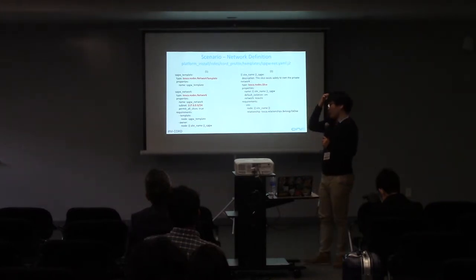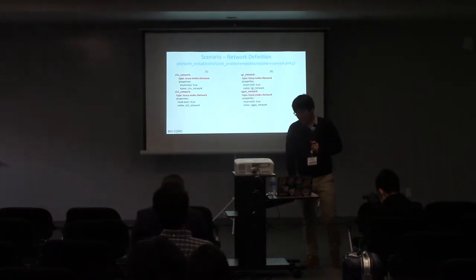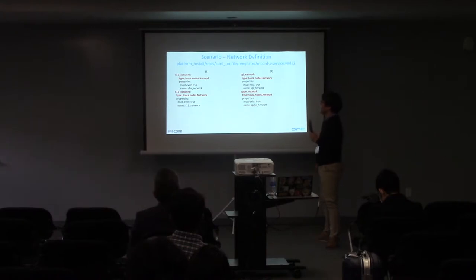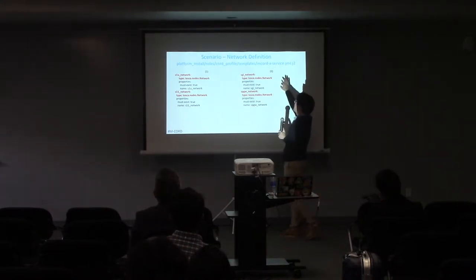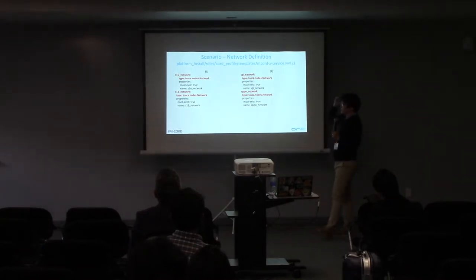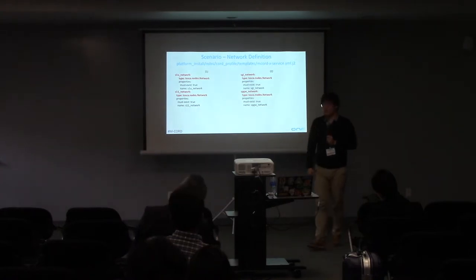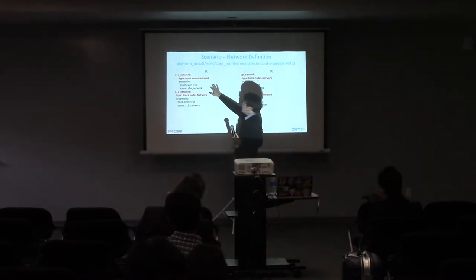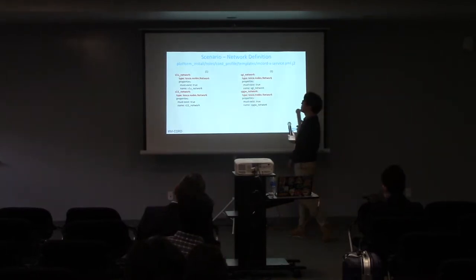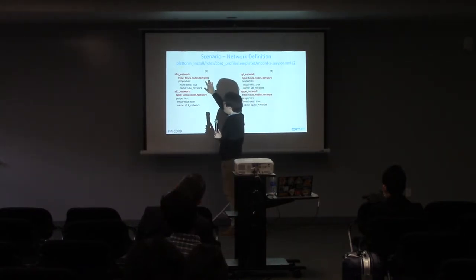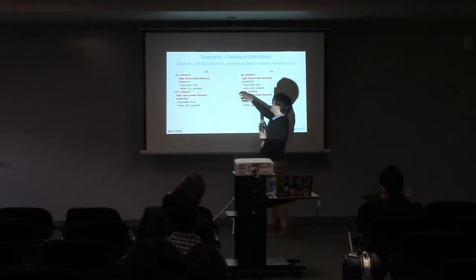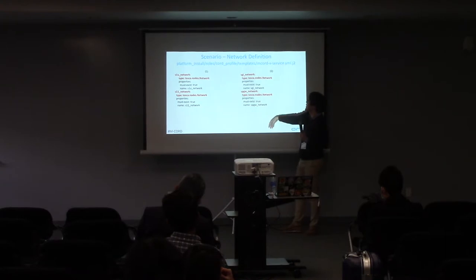We already defined those four networks — it's just a definition. Now we should include those four networks in the mCORD-X service file. This file includes all information about VNFs and network interfaces among virtual network functions. To use the networks we defined, we should register those four networks at the top of this file: S1U network, S11, SGI, and finally the SP Gateway network. Each network type is tosca.nodes.Network with some properties.